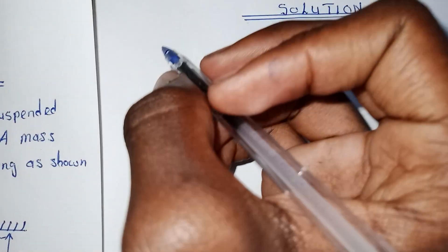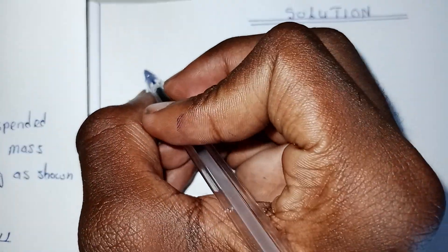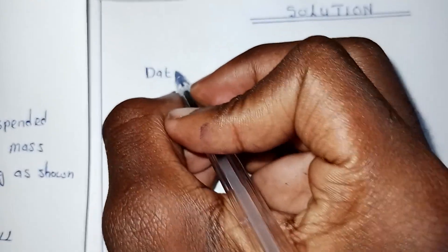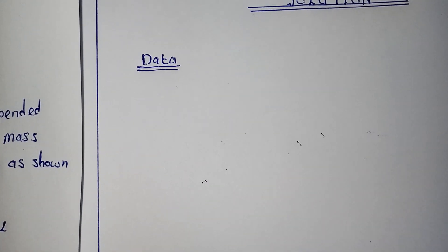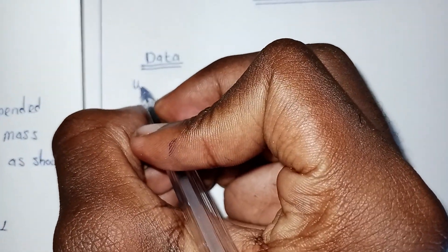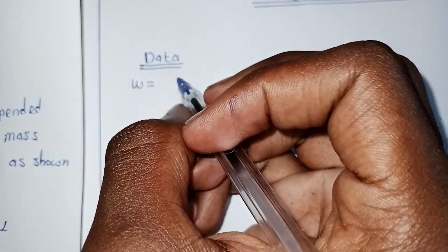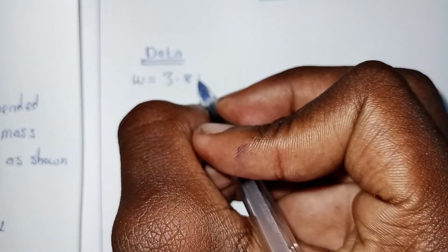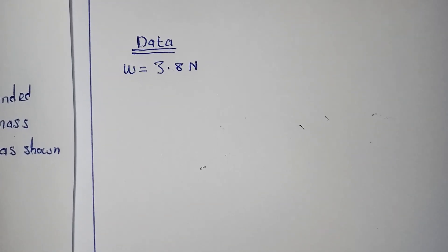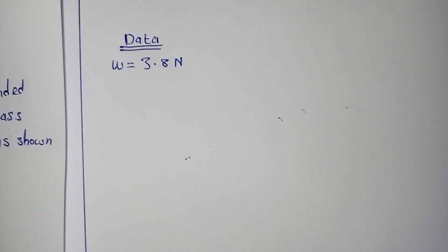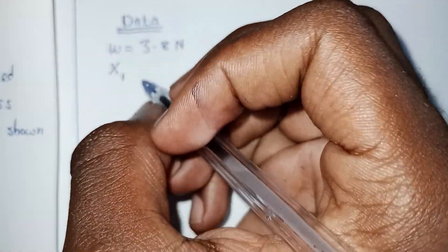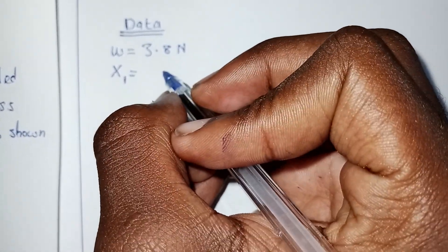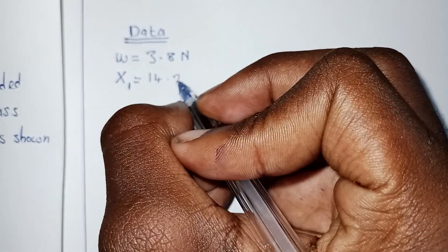I have the solution so I'm going to first of all write my data — it's very important in physics. The first thing: we have a certain weight of 3.8 newtons. Then we have been taught that for the first spring we had a displacement, which was our initial, of 14.2 centimeters.